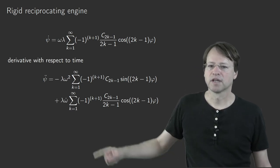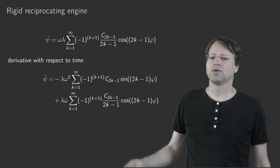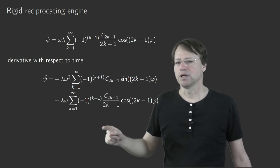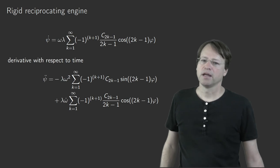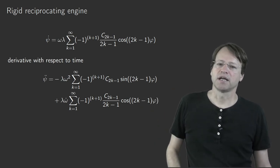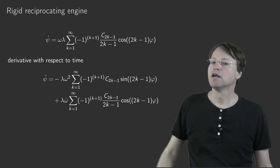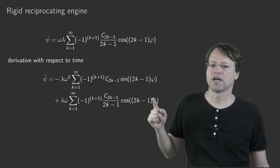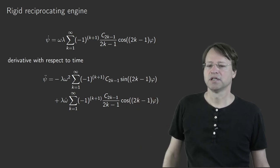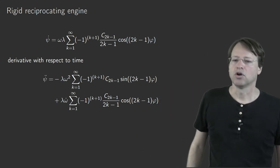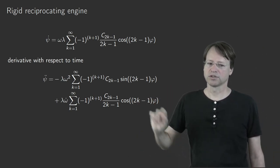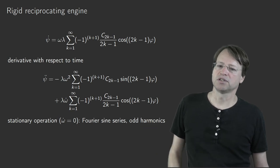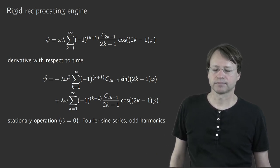Taking one more time derivative gives the angular acceleration ψ̈. This yields a stationary term (odd-order sine harmonics) and a non-stationary term. For stationary operation, ψ̈ is represented by a Fourier sine series with odd harmonics. If odd-order cosine harmonics appear in a measurement of ψ̈, this indicates non-stationary motion, which should generally be small.